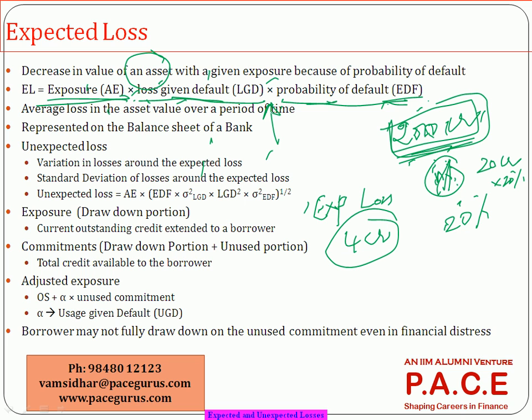From the bank's standpoint, 4 crores is directly expected as a loss, and that 4 crores has to be represented on the balance sheet as the expected loss — put as an adjustment to the receivables amount as part of the provisions being set for bad debt expense.